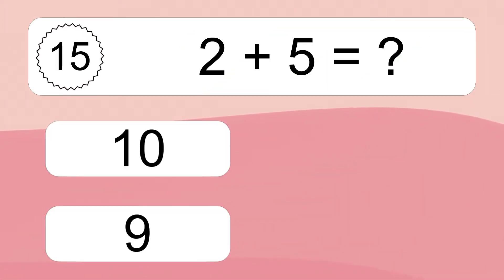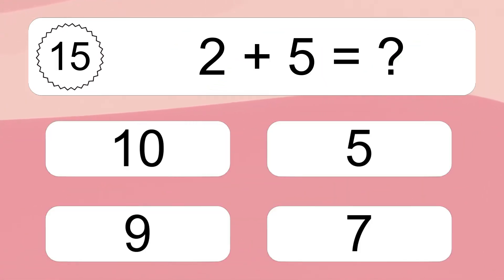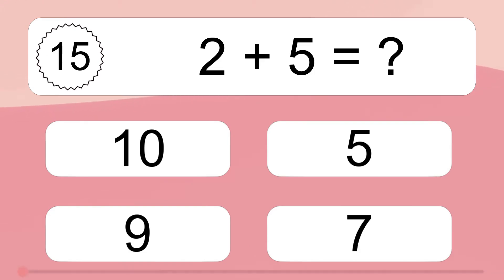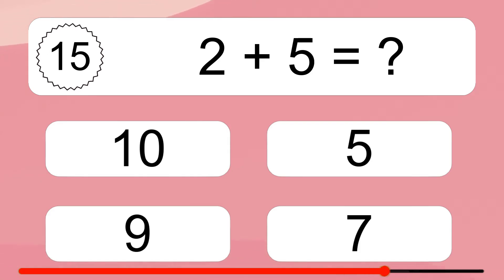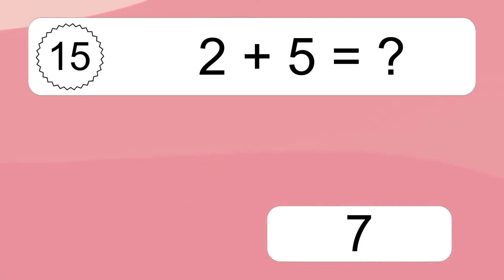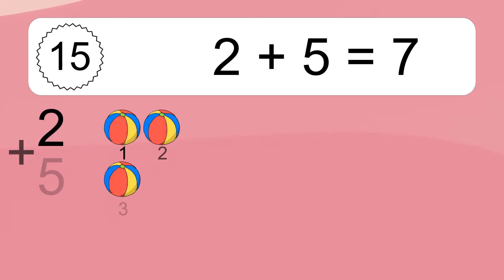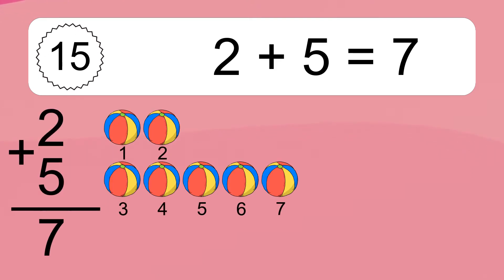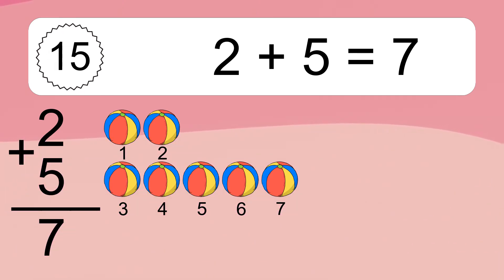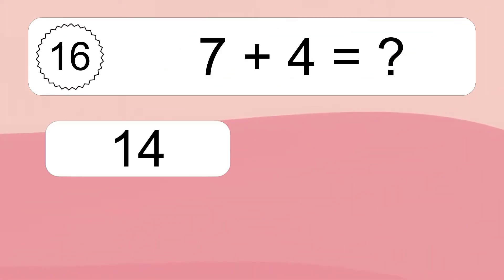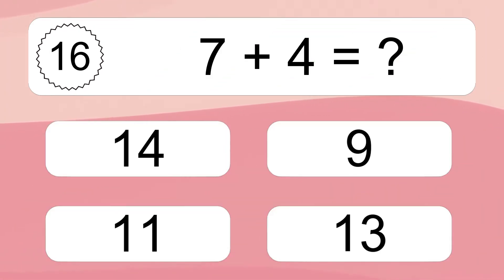2 plus 5 equals what? 2 plus 5 equals 7. Let's count it: 1, 2, 3, 4, 5, 6, 7.